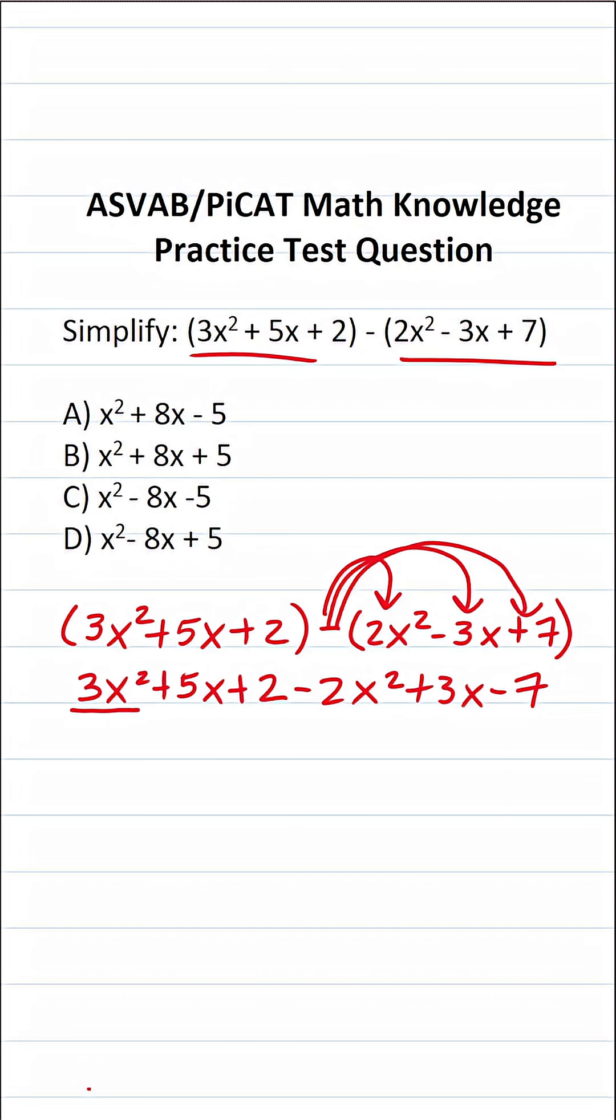What is the corresponding like term of 3x squared? It's going to be negative 2x squared. Let's combine this. 3x squared minus 2x squared is just going to be x squared. Now once I combine like terms I typically like to cross them out so it makes the work nice and neat.